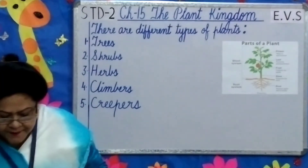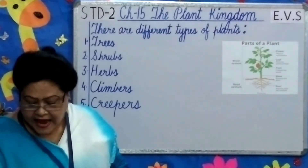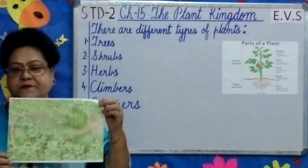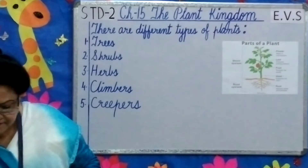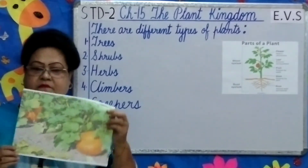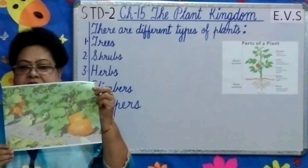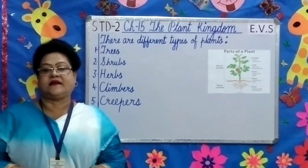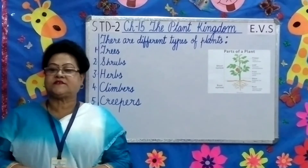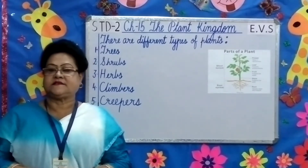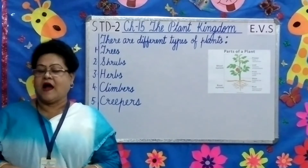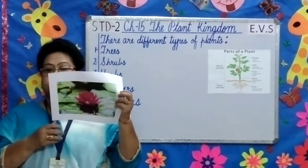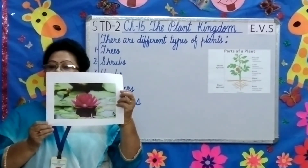Creepers have weak stems and they grow along the ground, such as watermelon and pumpkin. We also have thorny plants like the cactus, which are mostly found in deserts. Plants that grow in water are called aquatic plants, like the lotus and water lily.